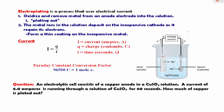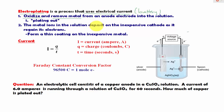In this lesson we are going to learn about electroplating. Electroplating is a process that uses electric current. The source of this electric current could be from a battery. The electric current will oxidize and remove the metals from an anode electrode into the solution. In this case I have an anode made of silver.